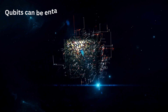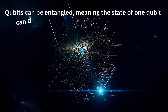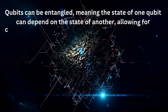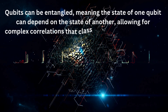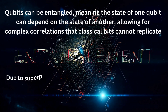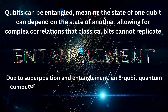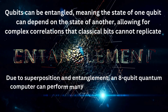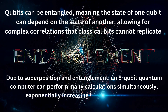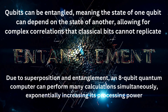Qubits can be entangled, meaning the state of one qubit can depend on the state of another, allowing for complex correlations that classical bits cannot replicate. Due to superposition and entanglement — parallelism — an 8-qubit quantum computer can perform many calculations simultaneously, exponentially increasing its processing power compared to classical bits.